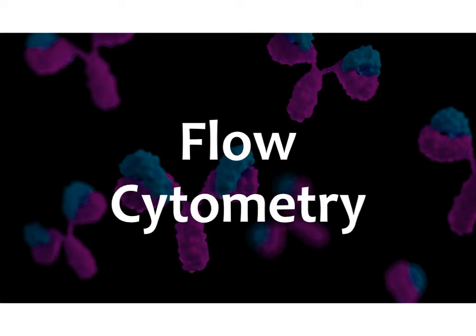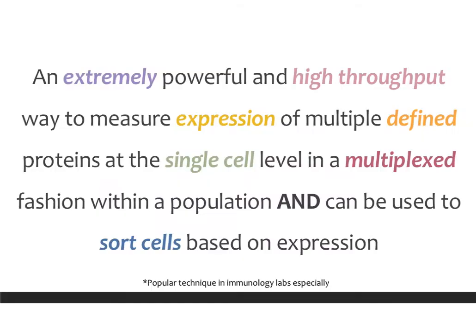In this video, we're going to talk about flow cytometry. Flow cytometry is an extremely powerful tool — in a very high throughput way — to measure expression of multiple defined proteins. It's defined because you have to know what proteins you want to look at. It's not like a proteomic screen or mass spec where you identify every protein. It is the proteins that you know about, but it can be many of them.